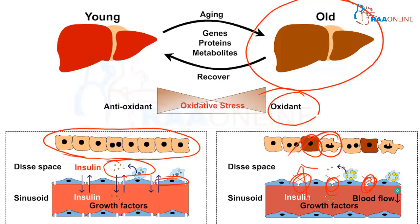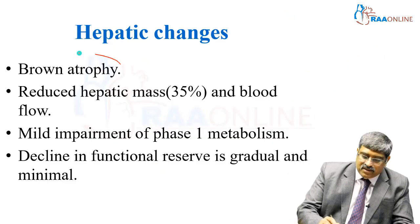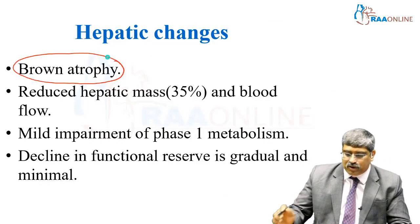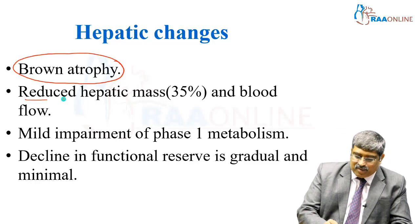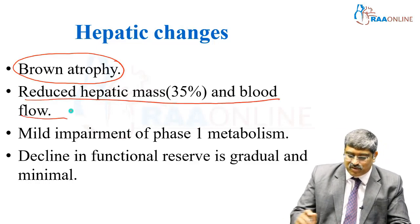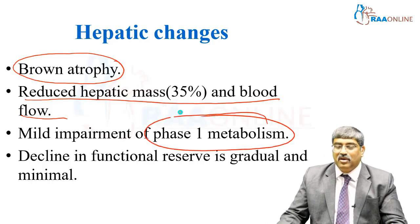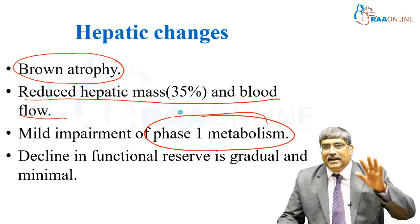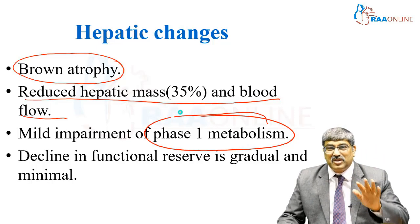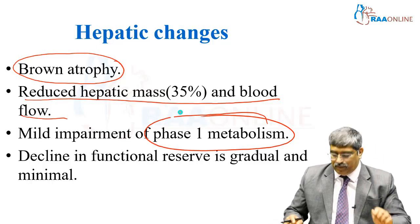There is also decreased hepatic blood flow, and the senescent cells cannot release receptors. To summarize, there is brown atrophy, hepatic mass is reduced, blood flow comes down, there is impairment of phase 1 metabolism, and the decline in functional reserve is usually gradual and minimal.